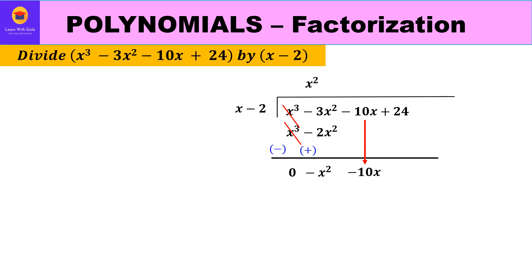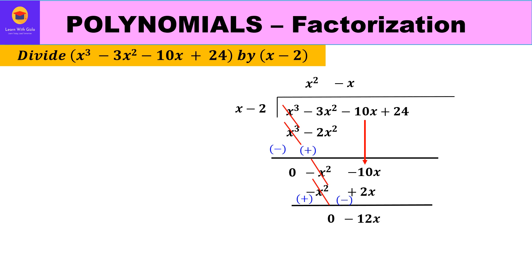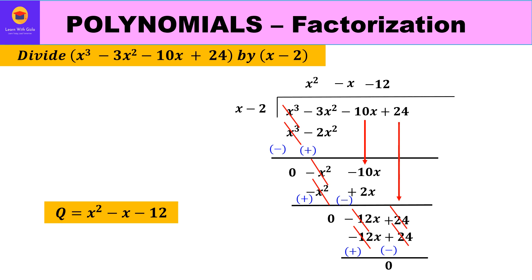Bringing down -10x, the new dividend is -x² - 10x. What multiplied by x gives -x²? That is -x. So -x(x - 2) = -x² + 2x. Changing signs, -x² cancels, and -10x - 2x gives -12x. Bringing down +24, the new dividend is -12x + 24.